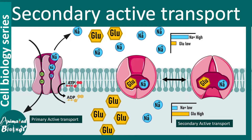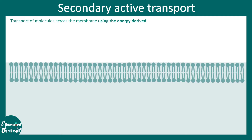In this short video we will talk about secondary active transport. Secondary active transport of molecules across the membrane happens using the energy derived from the electrochemical gradient created by primary active transport. So primary active transport and secondary active transport are interlinked. In fact, secondary active transport is highly dependent on primary active transport because the electrochemical gradient was built by it.